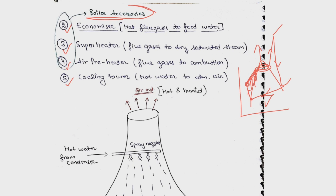The hot flue gases increase the temperature of the feed water exiting the feed pump, thereby reducing the work of the boiler and increasing its thermal efficiency. The boiler then converts saturated liquid into saturated vapor. After that, high-temperature flue gases flow again and further increase the temperature of the dry saturated steam — this is where superheaters are installed.